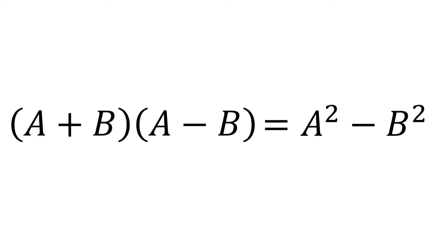Now using this formula, we can quickly find the product of the sum and difference of two terms without using the FOIL method or the distributive property in general. For example, let's say we have 3x plus 2y times 3x minus 2y.